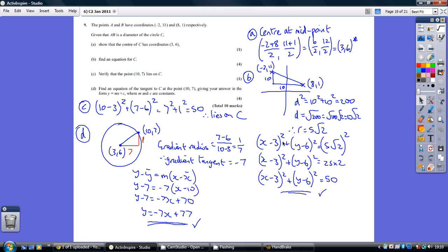So, x minus 3 all squared plus y minus 6 all squared equals the radius squared. 5 root 2 times 5 root 2 is 25 times 2, which is 50. So, our final equation for the circle is this.